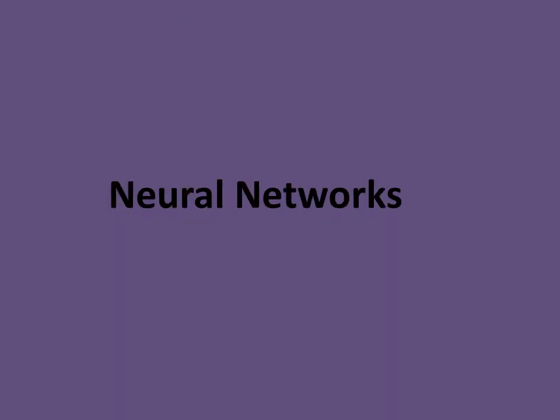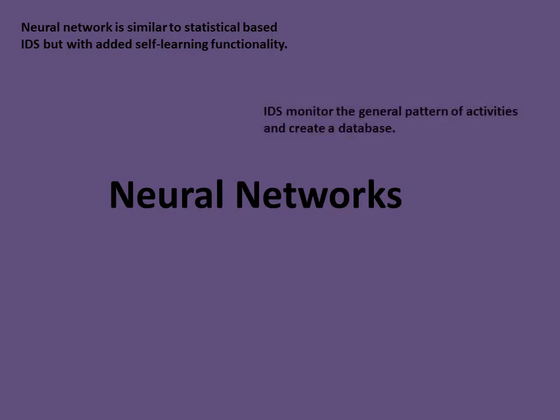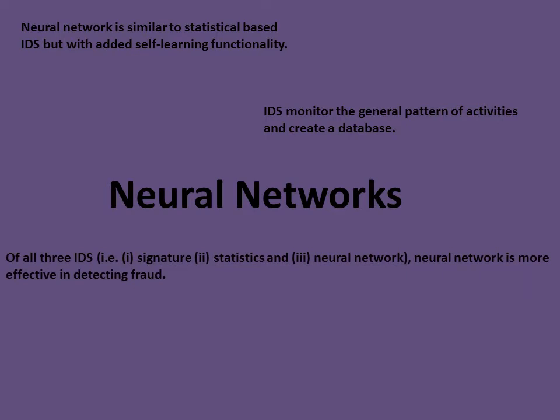Neural network IDS is similar to statistical-based IDS but with added self-learning functionality. It monitors general patterns of activities and creates its own database. Out of all three IDS types — signature, statistical, and neural — neural network is most effective in detecting fraud.